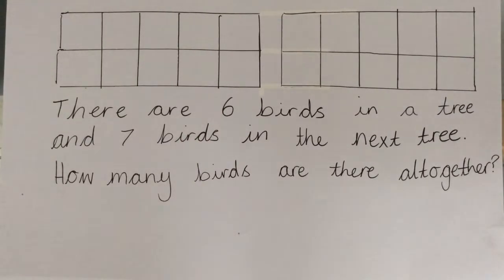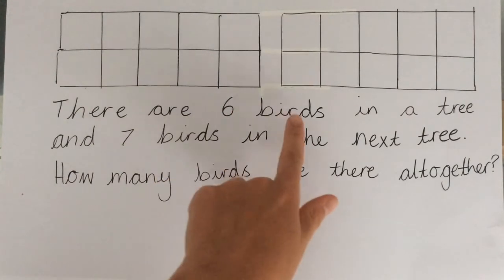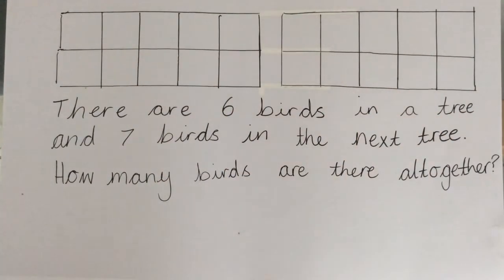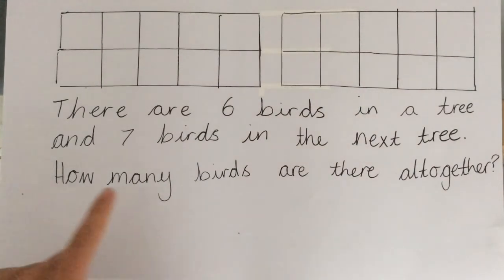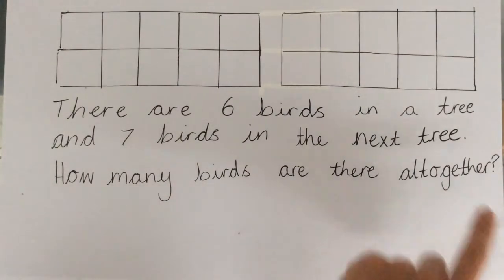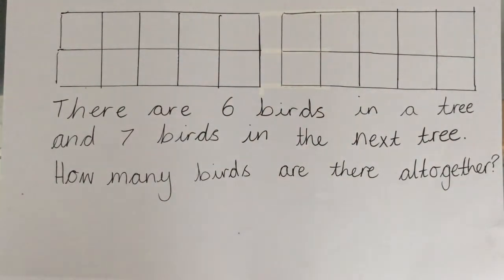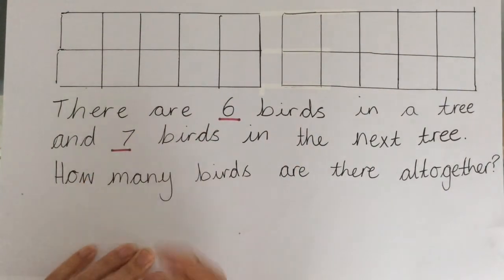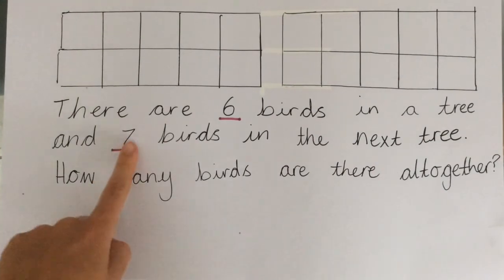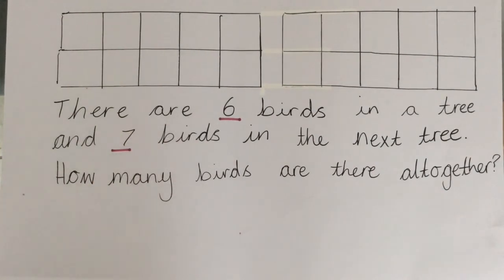Okay, so there are six birds in a tree. And seven birds in the next tree. How many birds are there all together? So let's underline those key numbers so we know there are six birds in one tree and seven in the other. And again, it's asking us that key word all together.